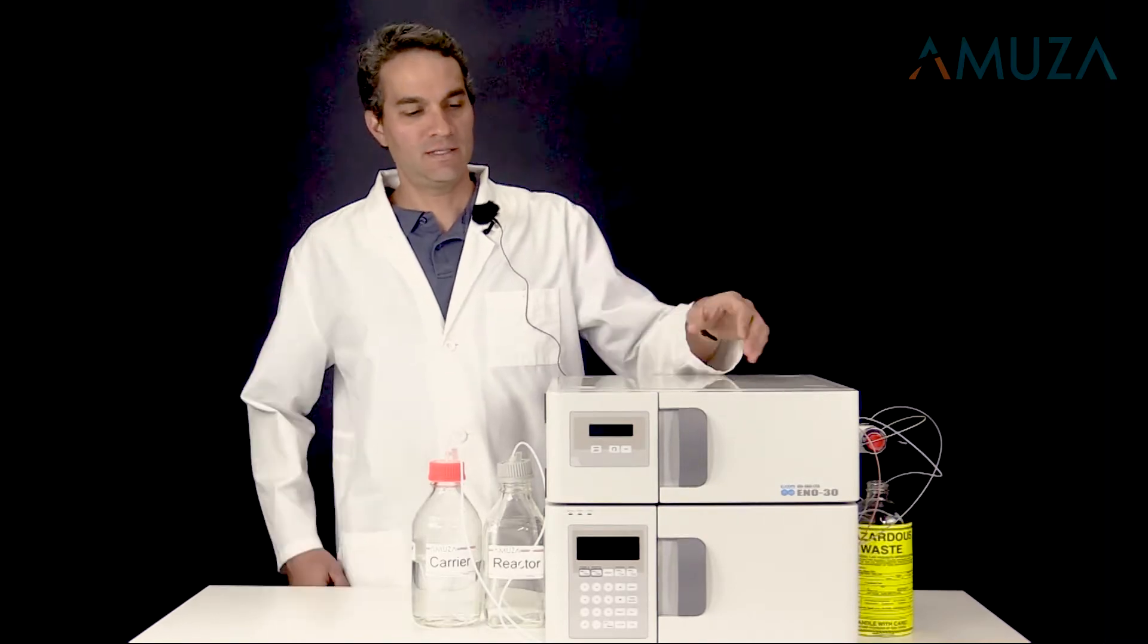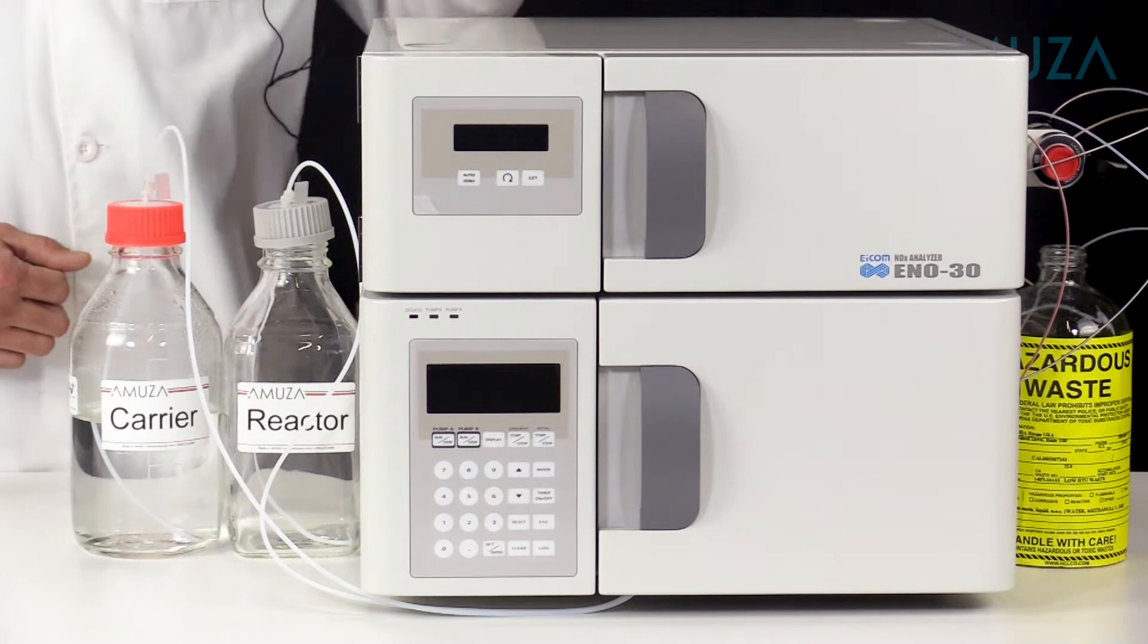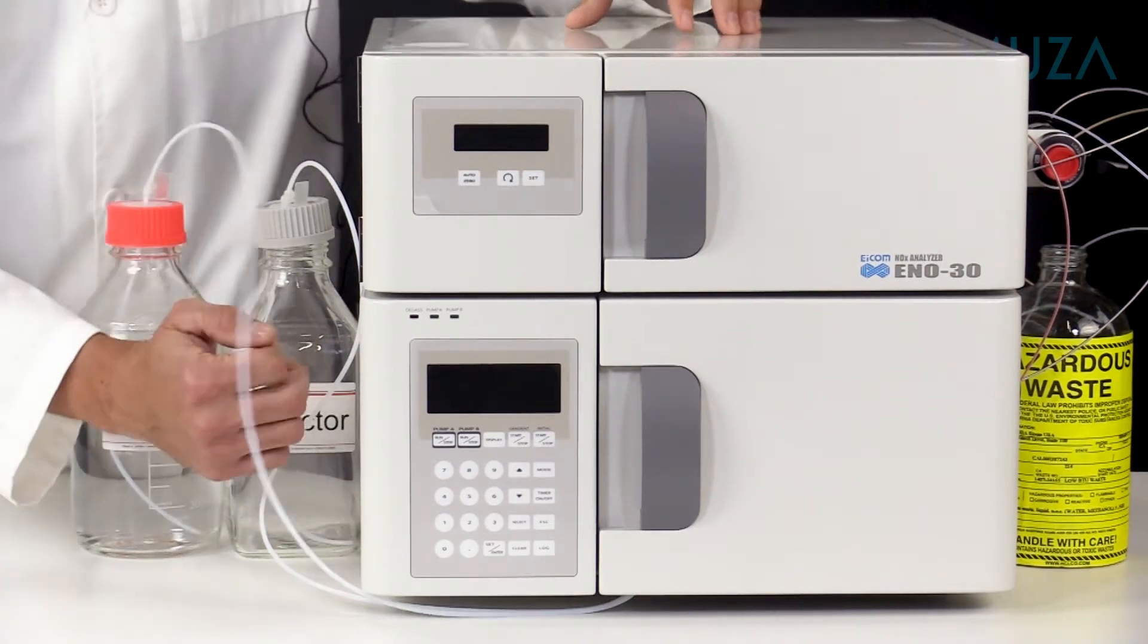Let's take a look inside to see how it works. The ENO-30 has an upper and lower unit.